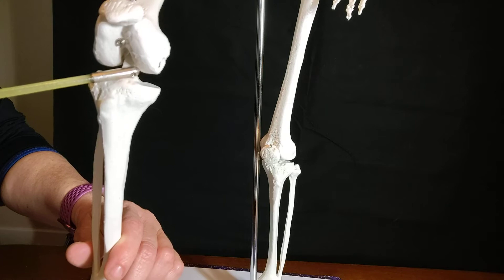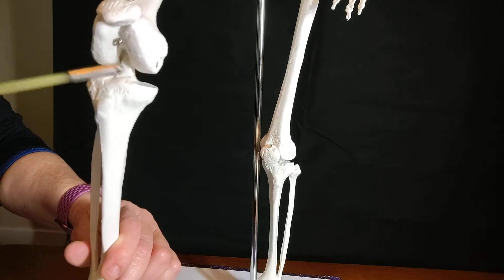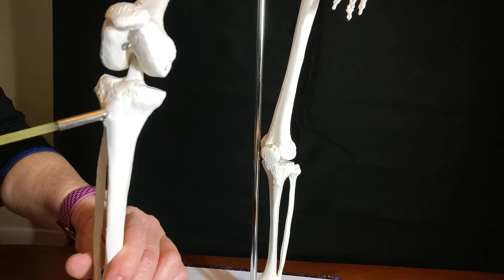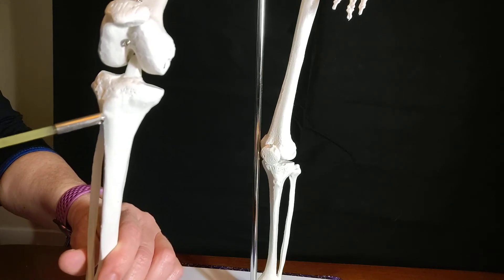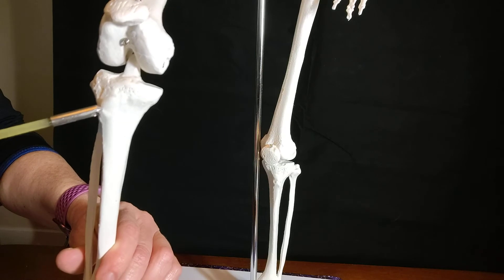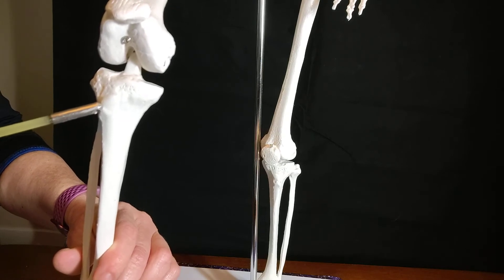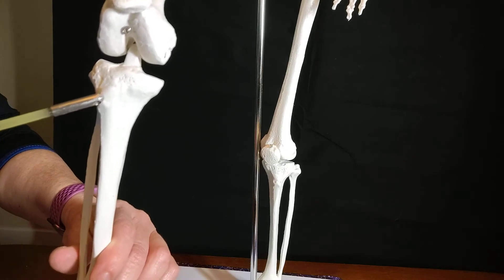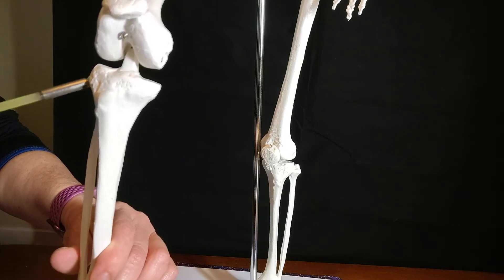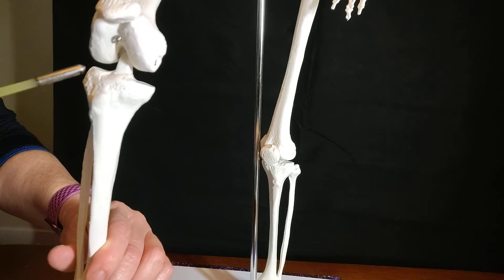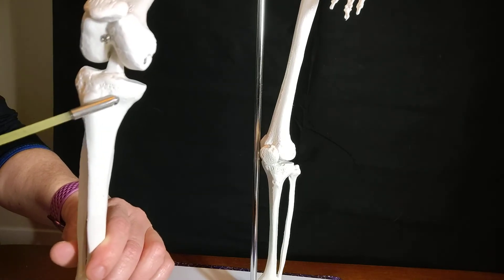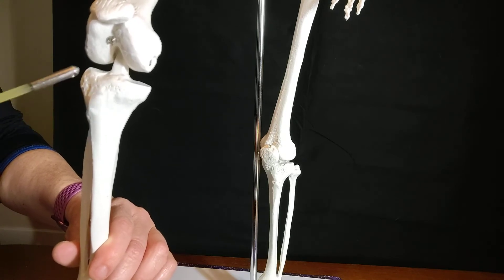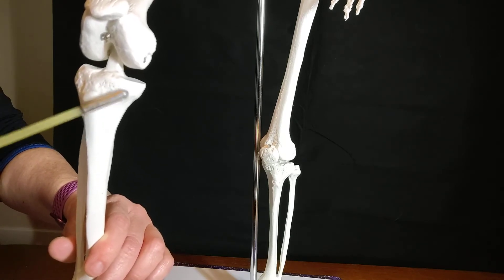The tibial plateau and the intercondylar eminence cannot be palpated on an intact human being, but the tibial tuberosity, which is the most anterior portion of the proximal tibia where the quadriceps tendon attaches, or the patellar tendon as it's also known, that can be easily palpated. The lateral and medial tibial condyles can be palpated on their lateral and medial aspects.